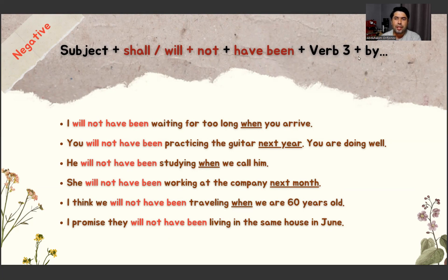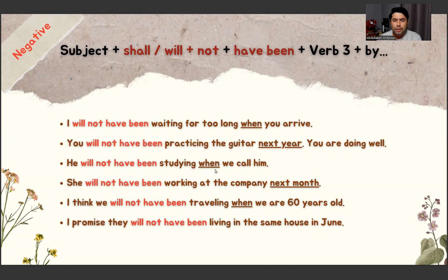Examples: I will not have been waiting for too long when you arrive. You will not have been practicing the guitar next year — you are doing well. He will not have been studying when we call him. She will not have been working at the company next month.